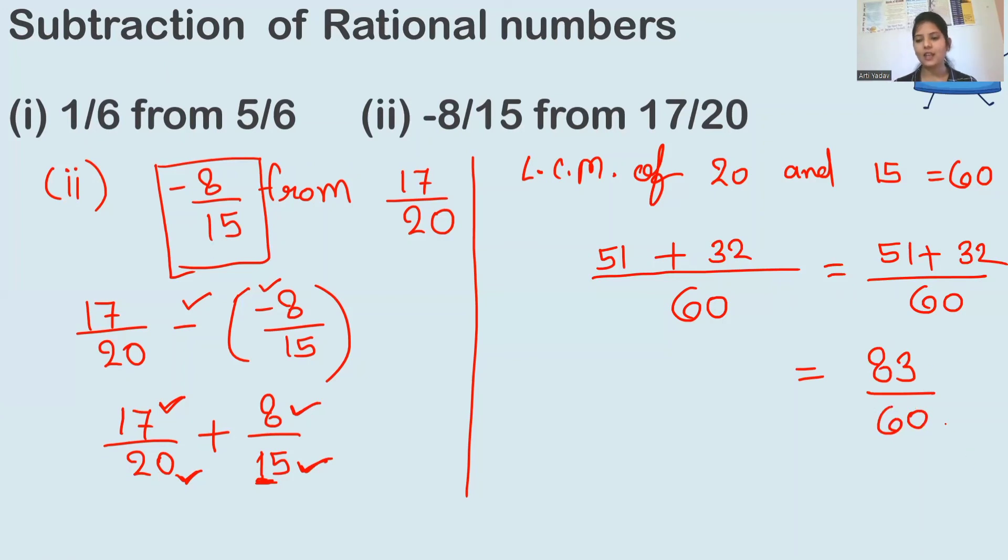So 51 plus 32 is 83 upon 60. Now is this divisible by any number? Is this divisible by 3? If we add 8 plus 3, it is 11. 11 is not divisible by 3, so we cannot cut it by 3. This will be the final answer. So like this you have to subtract the numbers.